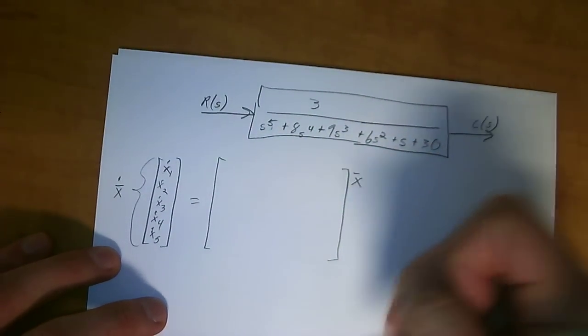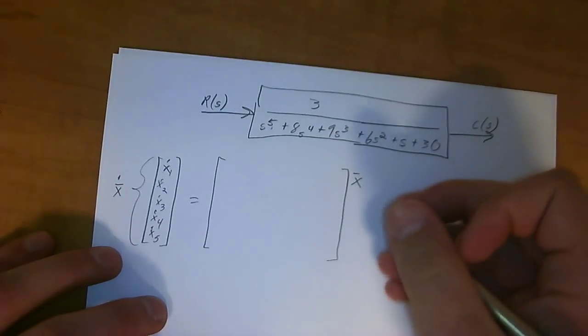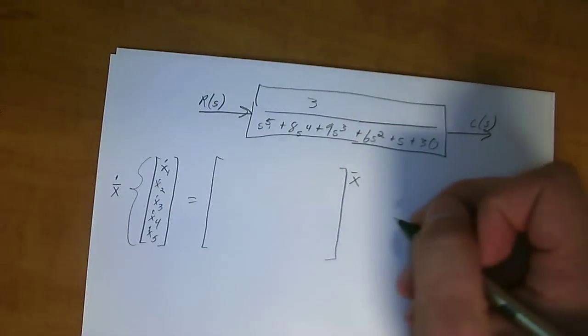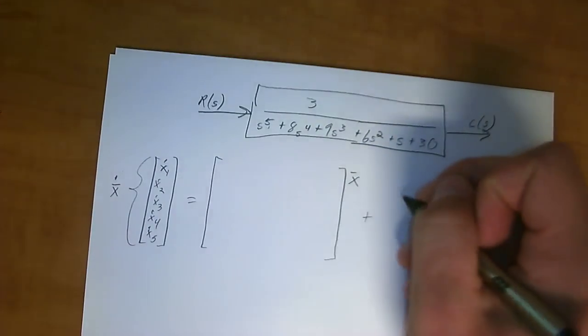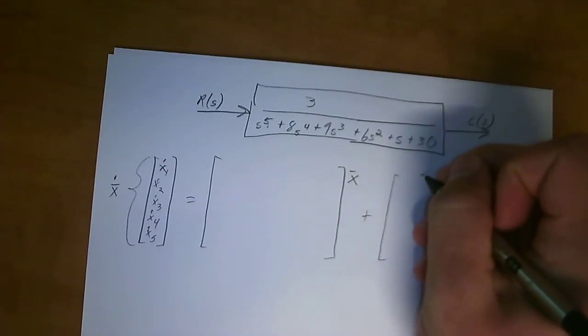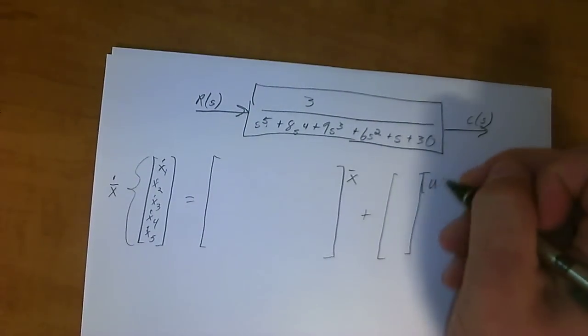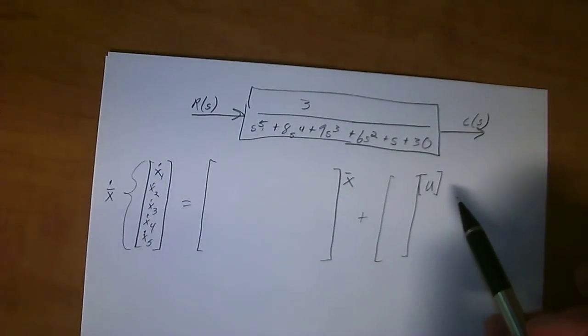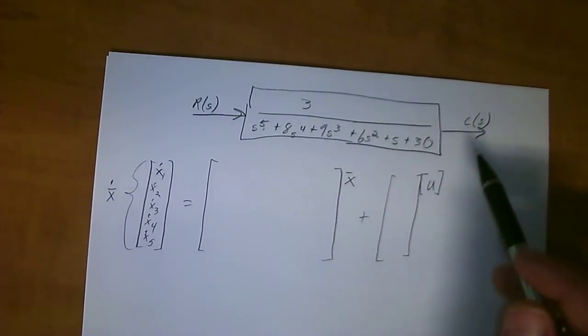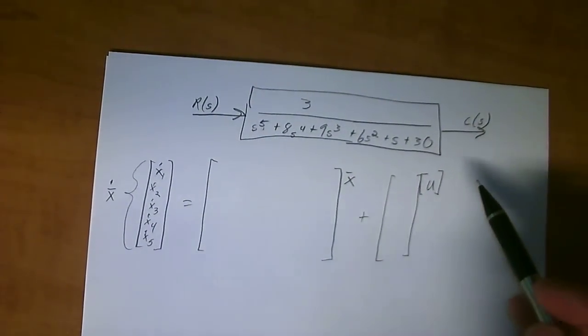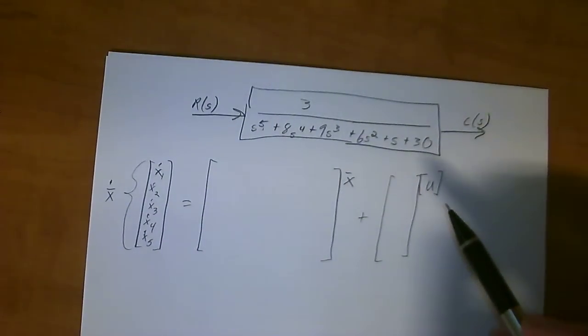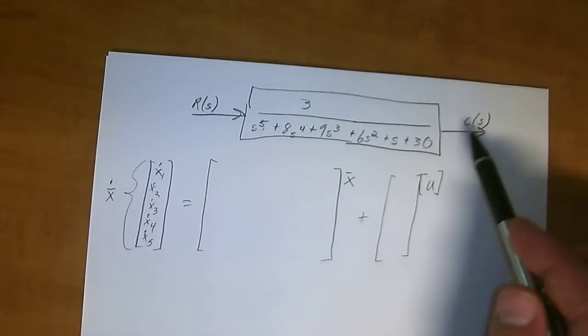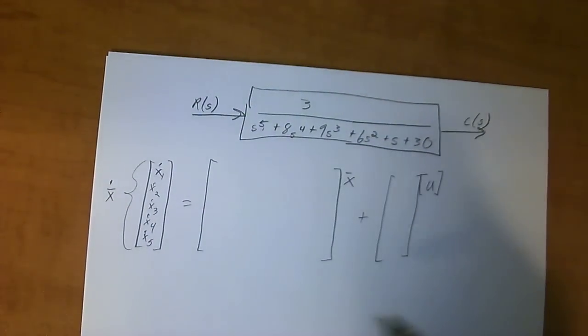This is going to be equal to a 5 by 5 matrix. We're just going to draw out here real quick. Multiply it by x bar, or x 1, x 2, x 3, x 4, and so on and so forth. Plus the output, which would be u. You use u generically as the output. Don't use c of s, just use u, because it makes the notation a lot clearer for you later on.